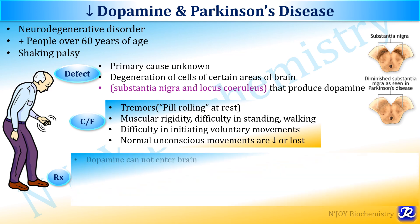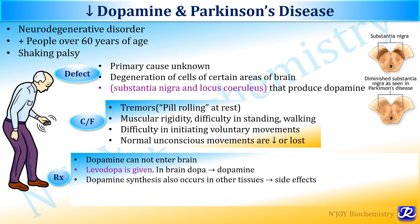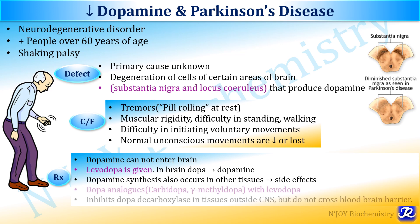The treatment of Parkinson's disease: as there is decreased dopamine, dopamine should be given. But since dopamine cannot enter the brain, it cannot be given directly, and that is why levodopa is given. In the brain, levodopa by decarboxylation is converted to dopamine. However, dopamine synthesis also occurs in other tissues from levodopa and results in various side effects. That is why levodopa is given with DOPA analogs like carbidopa and alpha-methyldopa. These DOPA analogs inhibit DOPA decarboxylase in tissues outside the CNS, but cannot cross the blood-brain barrier.